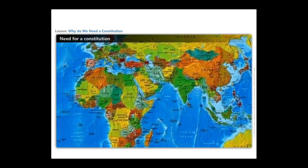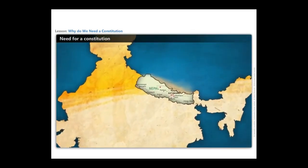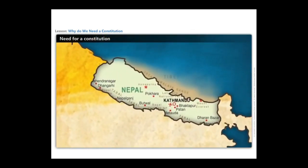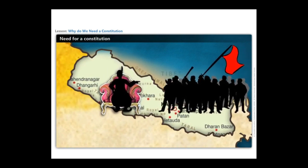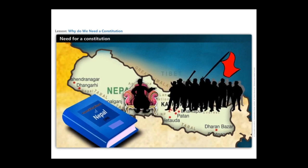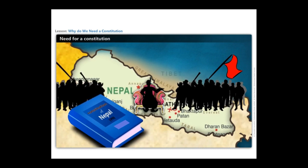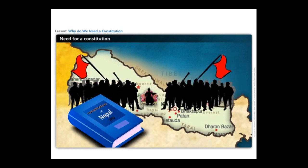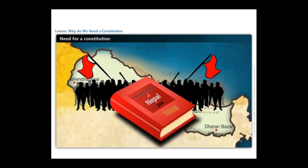Let us understand it with an example of our neighboring country, Nepal. The country of Nepal has witnessed several people's struggles for democracy. There was a people's struggle in 1990 that established democracy, but the constitution rested the final authority with the king. After a people's movement for a long time, in 2006 they finally succeeded in putting an end to the powers of the king, and they had to write a new constitution to establish Nepal as a democracy.